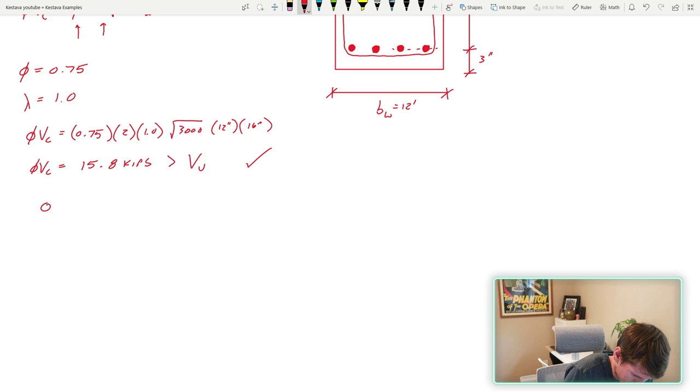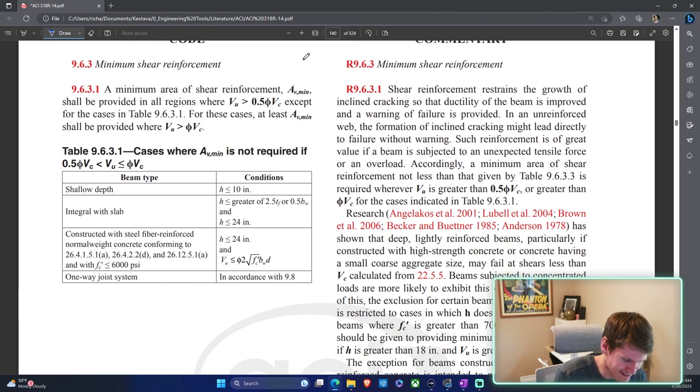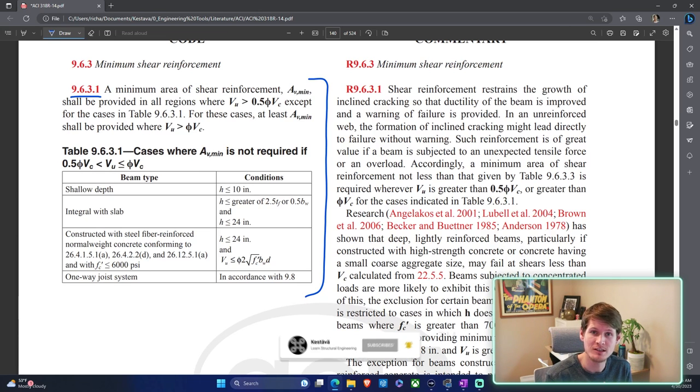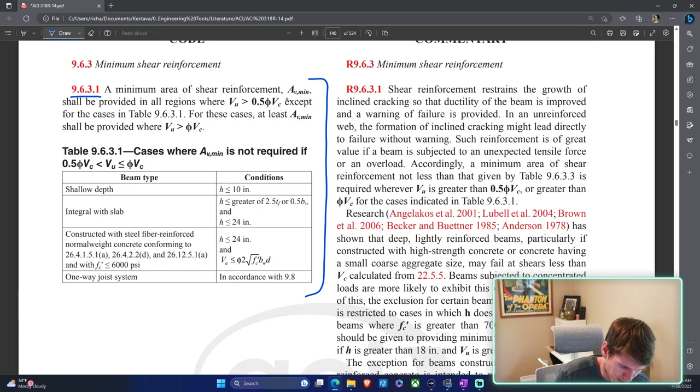How do we do that? Well, if we first need to find phi VC over two, that's just what we found above divided by two and gets you 7.9 kips. What are we doing with that? Well, in ACI 9.6.3.1, chapter nine is the beam section of the ACI, you have this whole section right here which talks about AV min requirements and some things that you can do in order to get out of providing AV min. AV min, for those of you don't know, is just your minimum amount of shear reinforcement that needs to go into a beam.